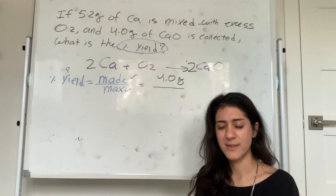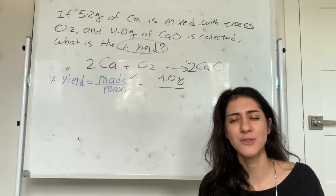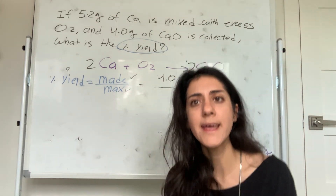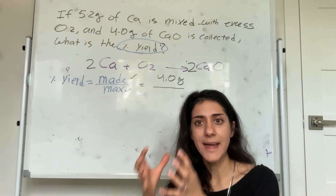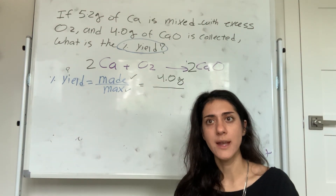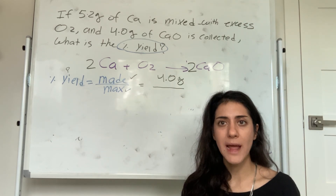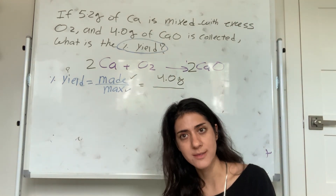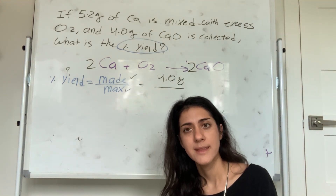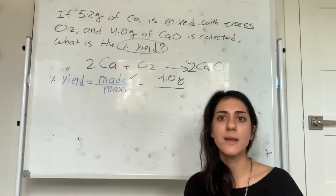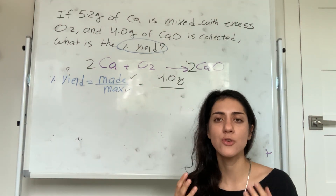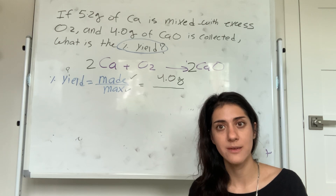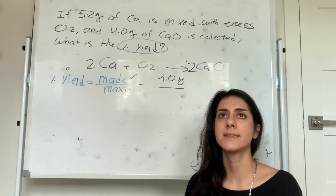Since calcium is the limiting reagent, I can calculate the max calcium oxide I can make based on calcium alone. I have 5.2 grams of calcium. Grams won't get me anywhere, so I need to convert to moles: 1 mole of calcium is 40 grams. Then the grams cancel out and I have moles of calcium.